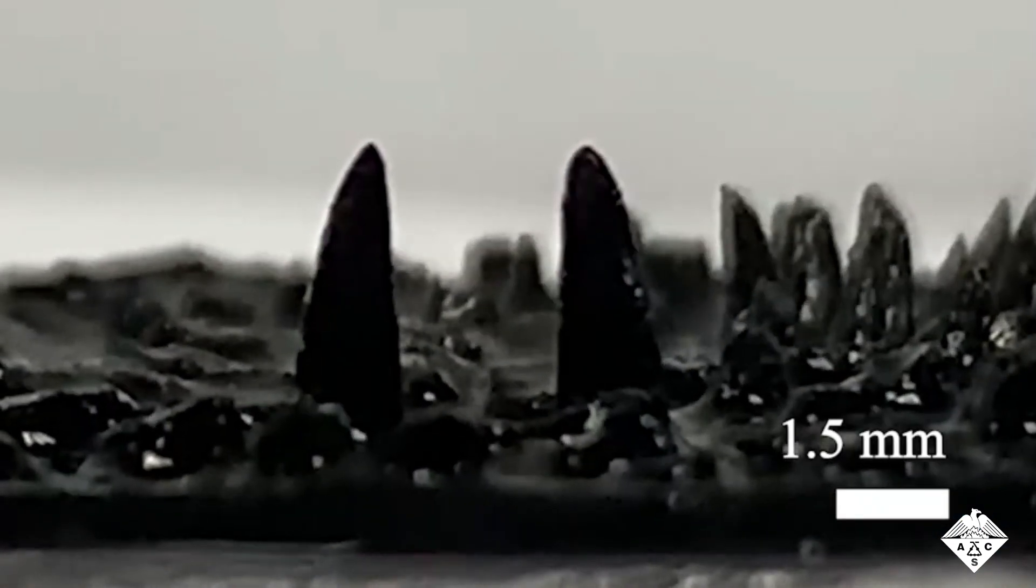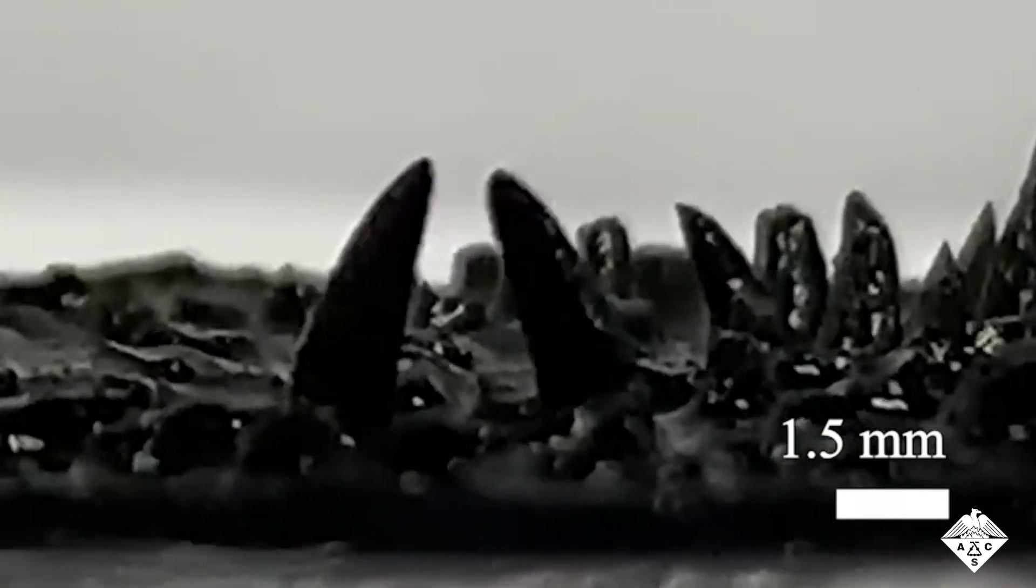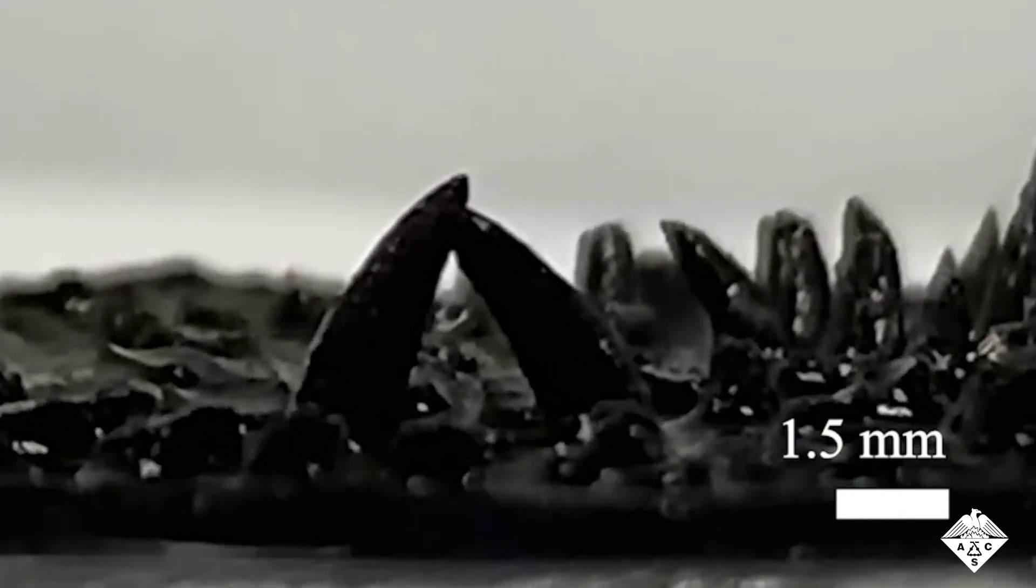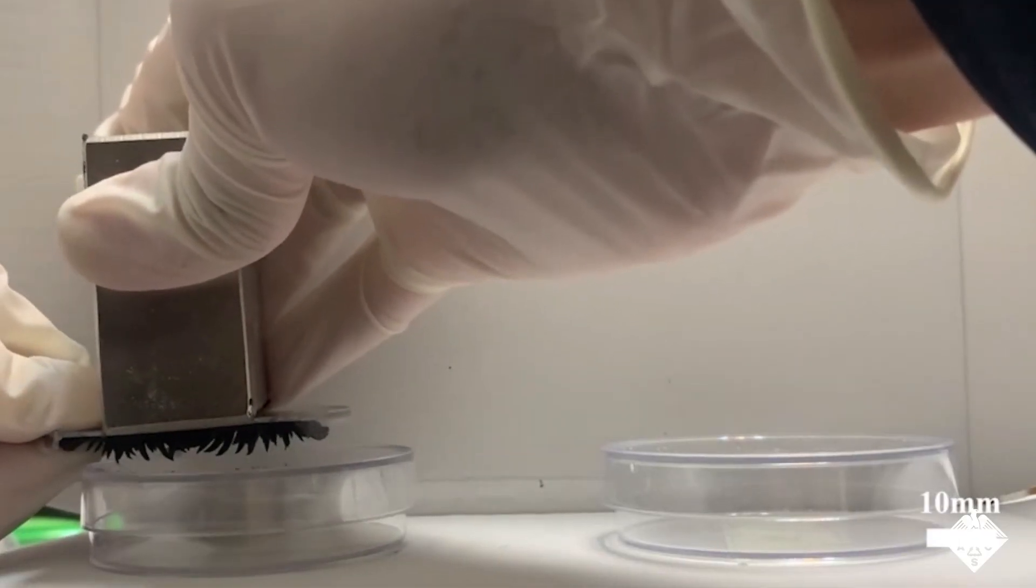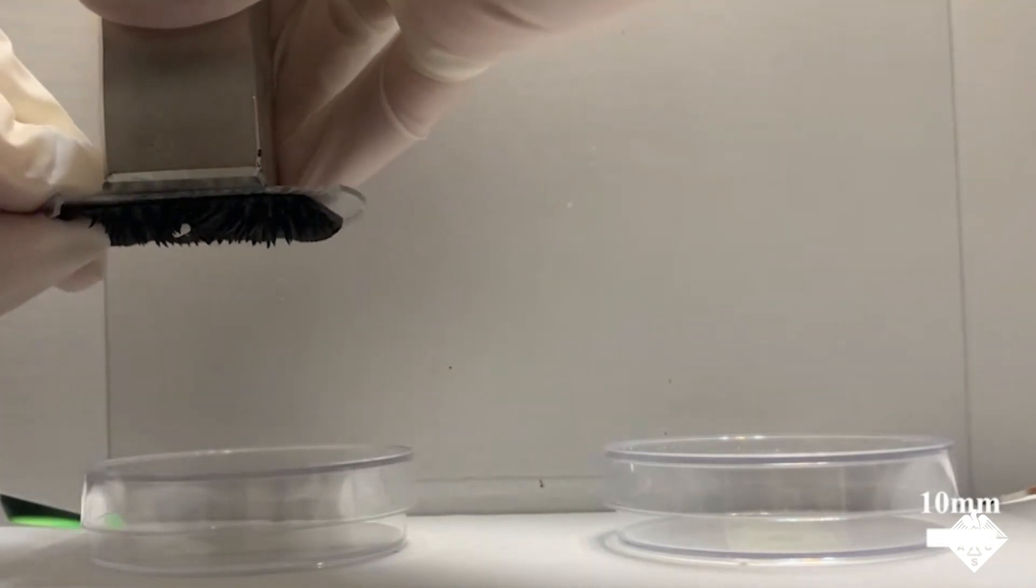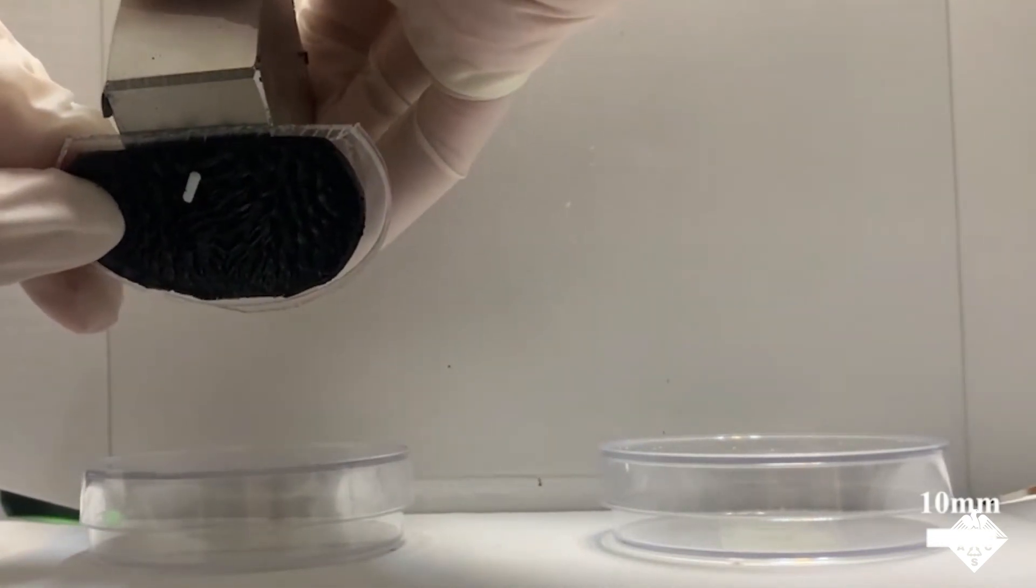Moving a magnet near the millirobot caused its legs to bend and produce a claw-like grasping motion. The millirobot could also grab a 3D-printed cylinder and carry it to a new location.